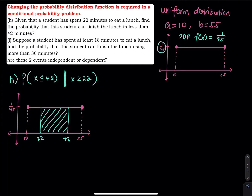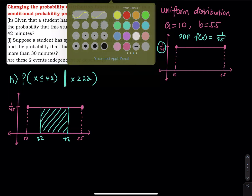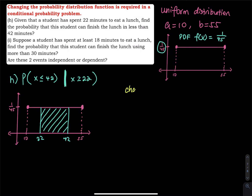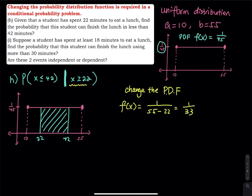Do you see there is a given condition? If the question is phrased like that, you have to change the PDF based on the given condition. The given is x ≥ 22. So the new PDF is f(x) = 1/(maximum − given) = 1/(55 − 22) = 1/33. This is no longer 1/45; it is now 1/33. That changes the height of the rectangle.